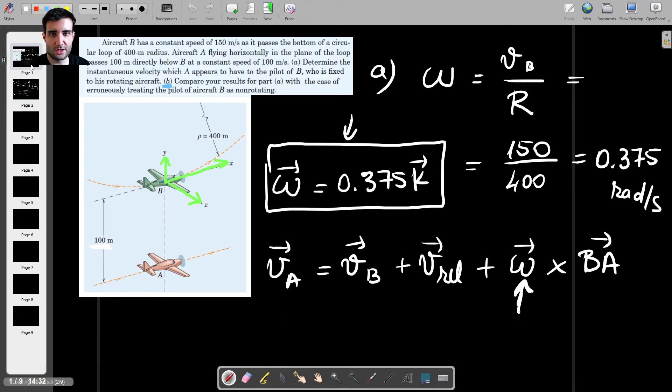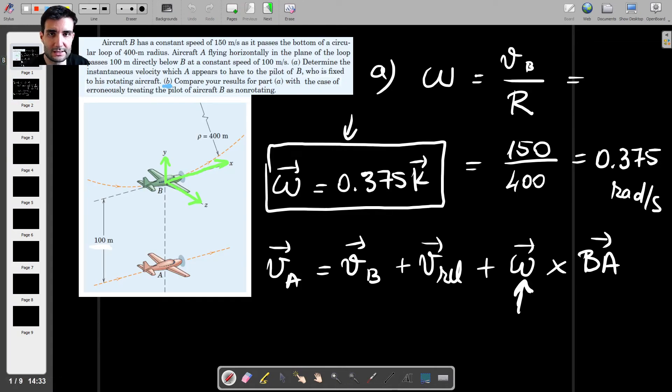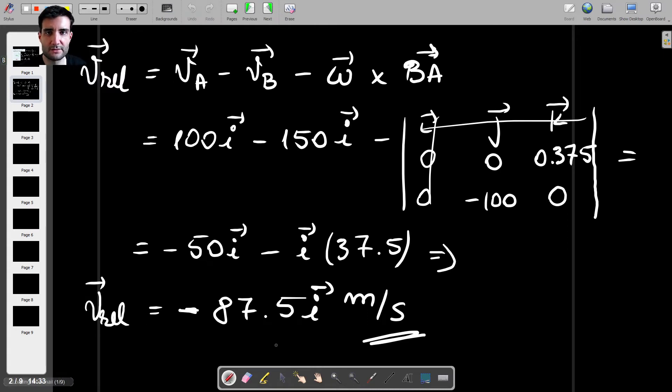So with respect to someone in aircraft, so with respect to the pilot of B, aircraft A seems to have a velocity of 87.5. And the minus sign tells us that the pilot in B sees the aircraft A going in the negative X direction, so sort of towards the tailplane, with a speed of 87.5 per second.